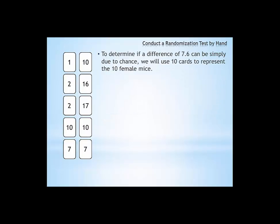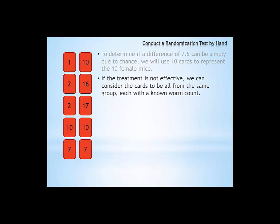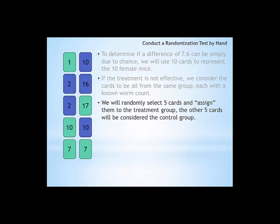And we're going to test this null hypothesis to see how likely it is to be true. To determine if a difference of 7.6 can be simply due to chance, we will use 10 cards to represent the 10 female mice. If the treatment is not effective, we can consider the cards to be all from the same group, each with a known worm count. We will then randomly select five cards and assign the first five to the treatment group and the following cards will be considered the control group.